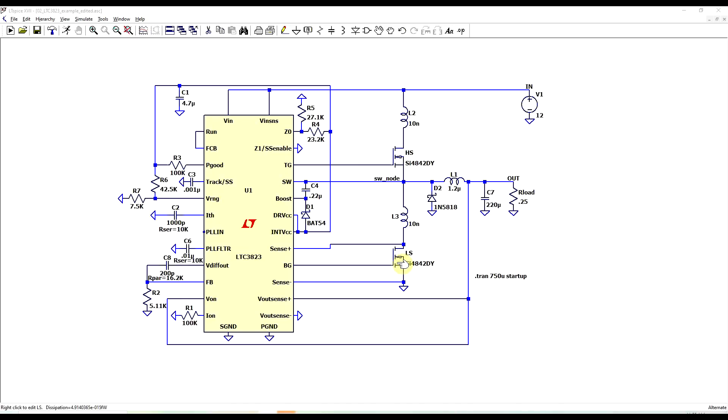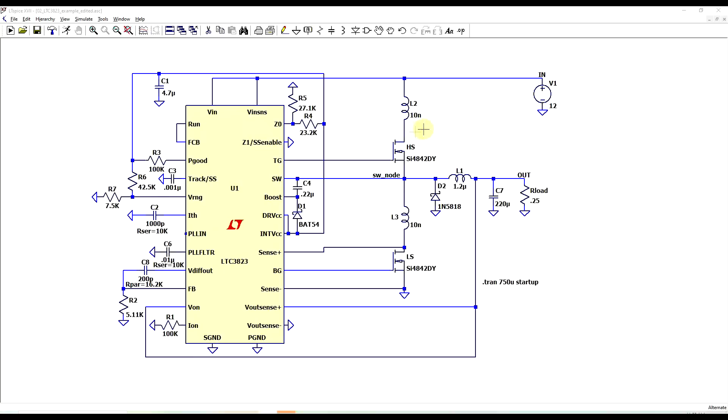Every trace, and for that matter every component pin, will have some amount of series inductance. If we add about 10 nanohenries in series with the two transistors and we rerun the simulation.